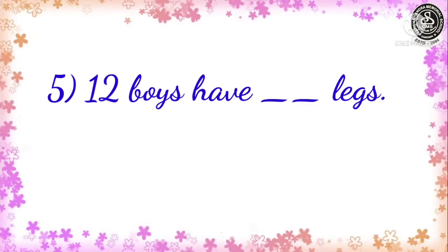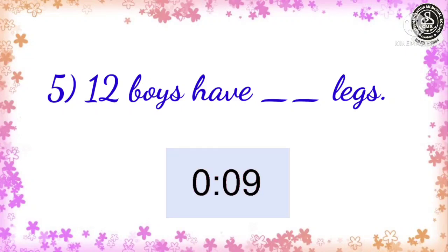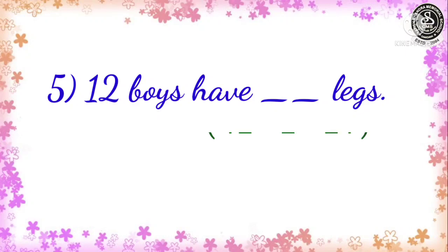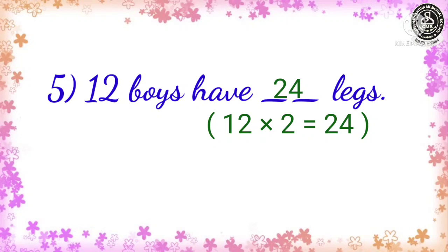Now, let us see question number 5. 12 boys have how many legs? Your time starts now. Time over. Let us check the answer. Each boy has 2 legs, so 12 multiplied by 2 — the total number of legs will be 24.